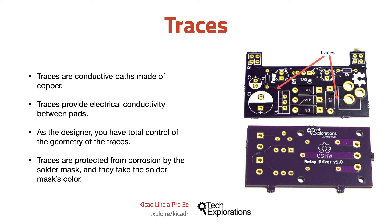Traces that are meant to convey low-power current signals, which typically are less than 20 milliamps, can be made narrower with less copper. Keeping the width of traces to around 0.3 millimeters or even less, depending on your manufacturer's guidelines, makes it possible to draw traces closer together and reduce the final size of your PCB.